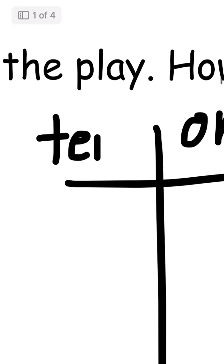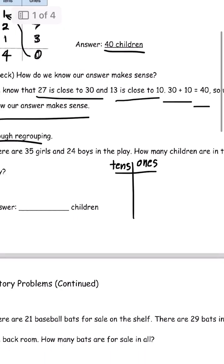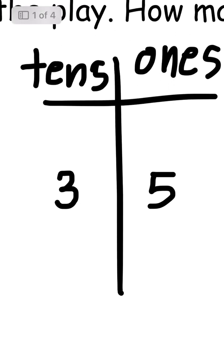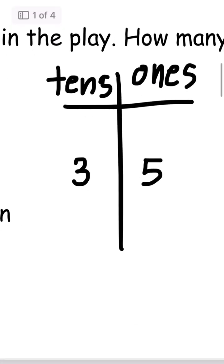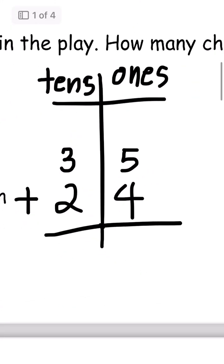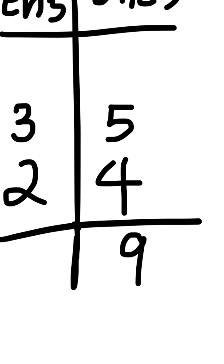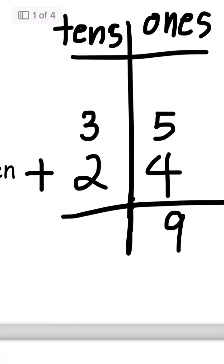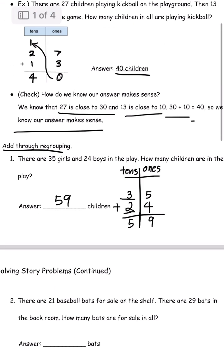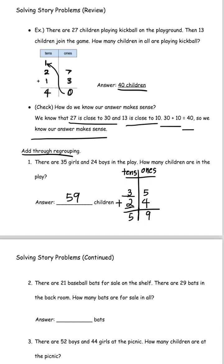This is the ones place and this is the tens place. It says 35 girls, so we put 3 on the tens place and 5 on the ones place, and then 24. So 5 plus 4 is 9. There is nothing to regroup because there are no more than 10 ones. And then 3 plus 2 is 5. So we have 59 children — that is the answer for number 1.